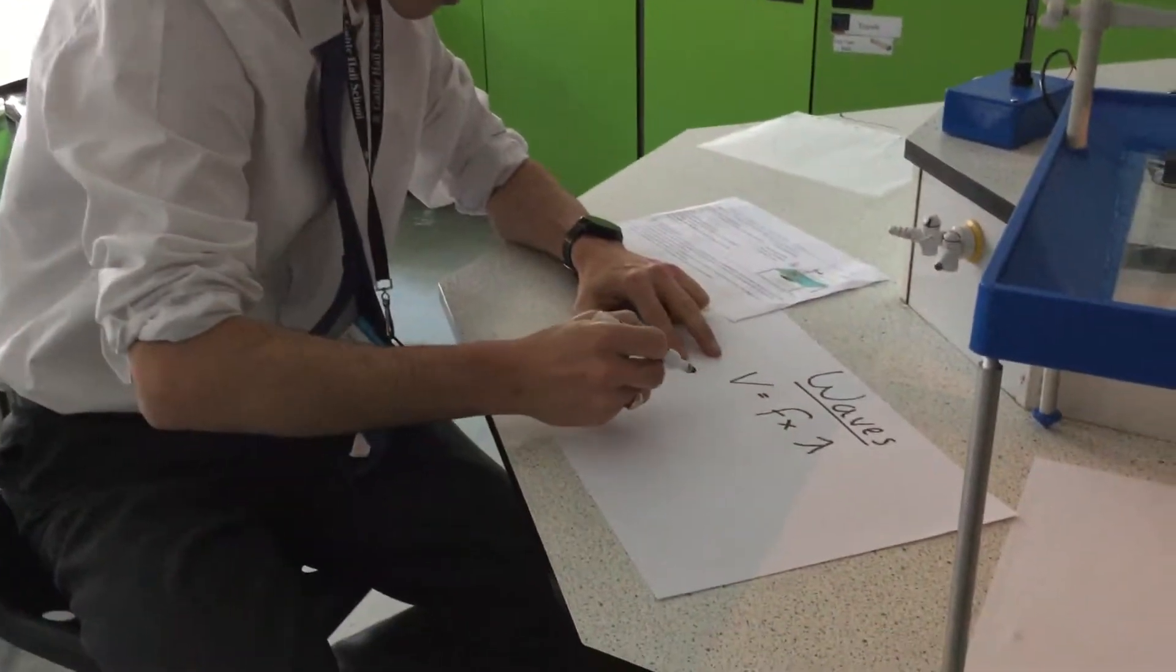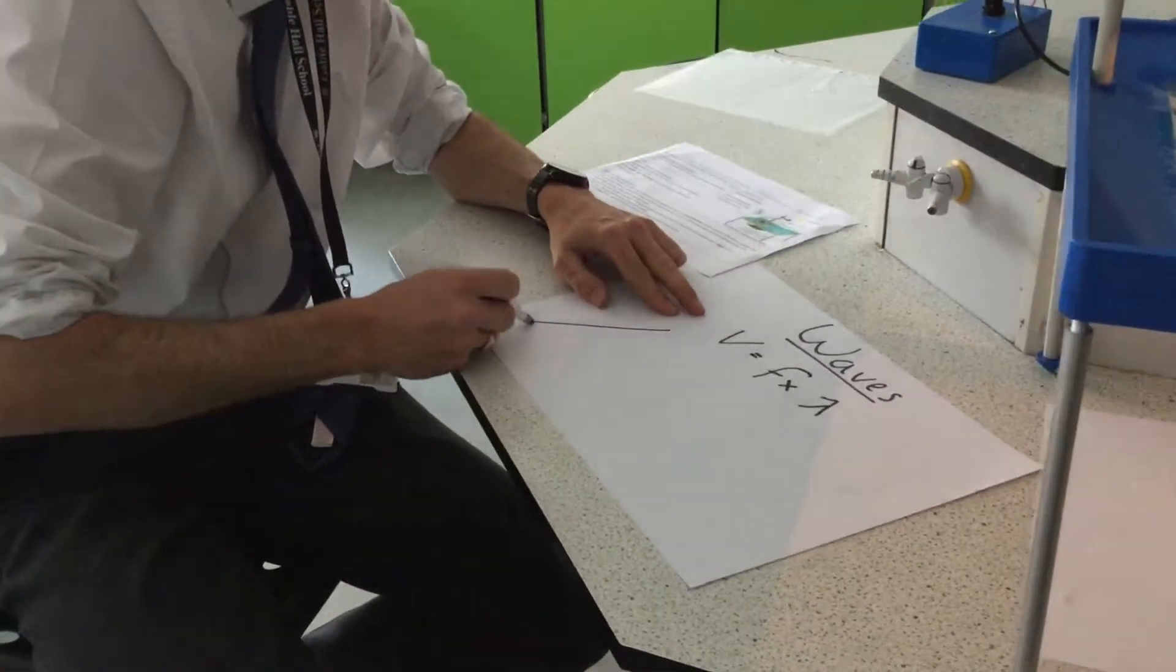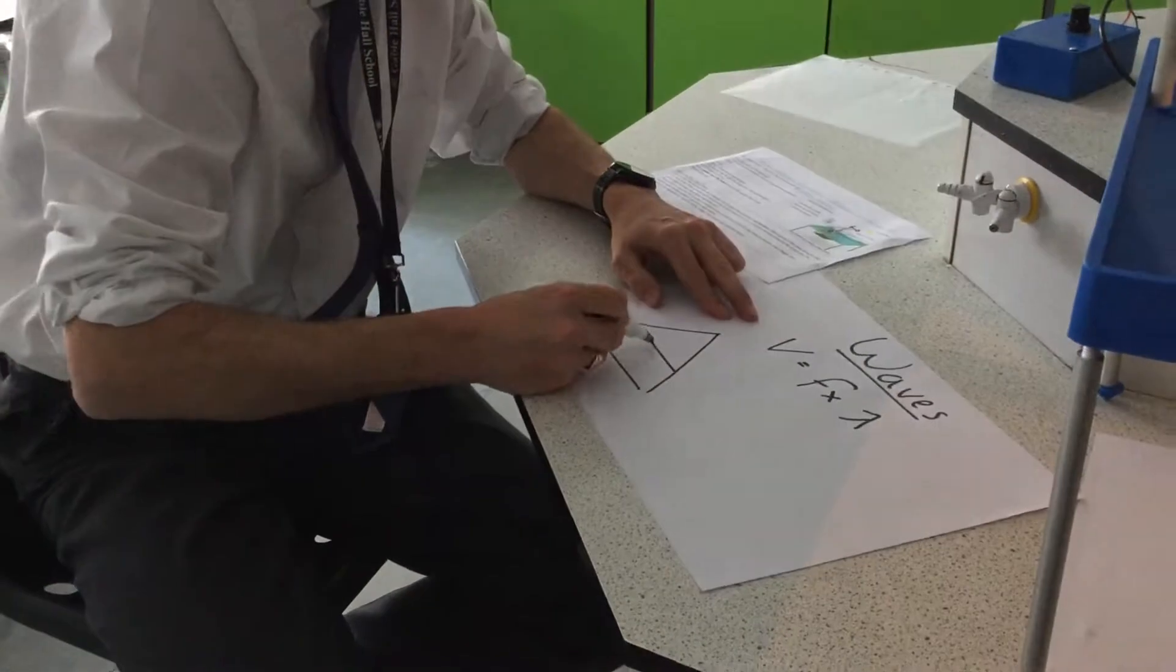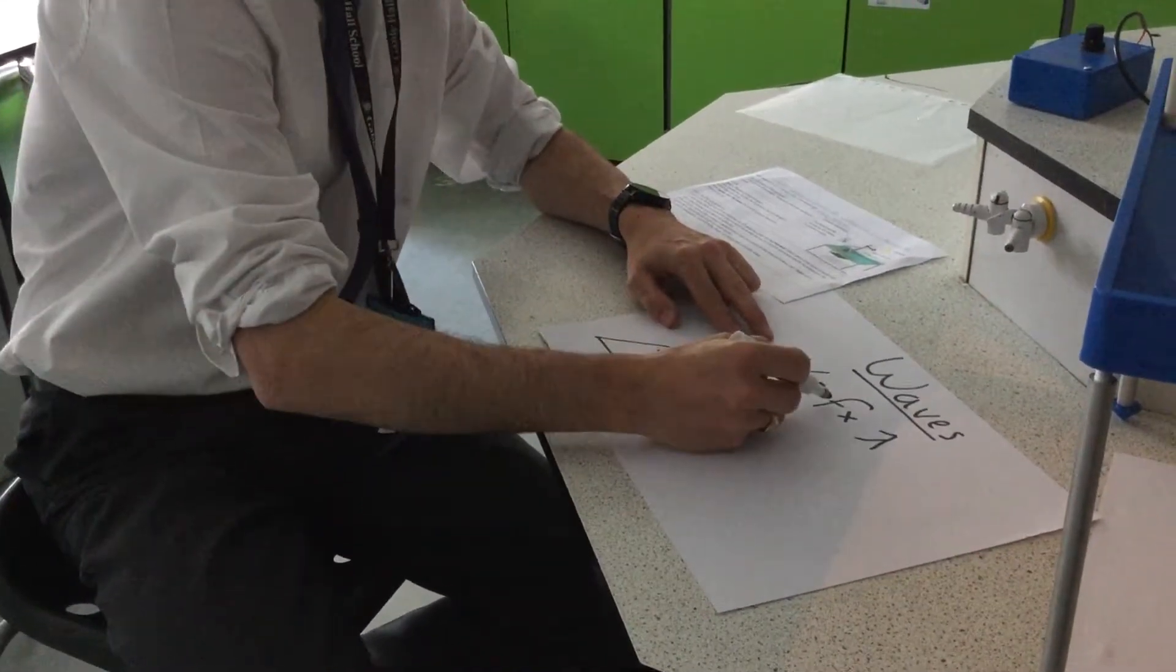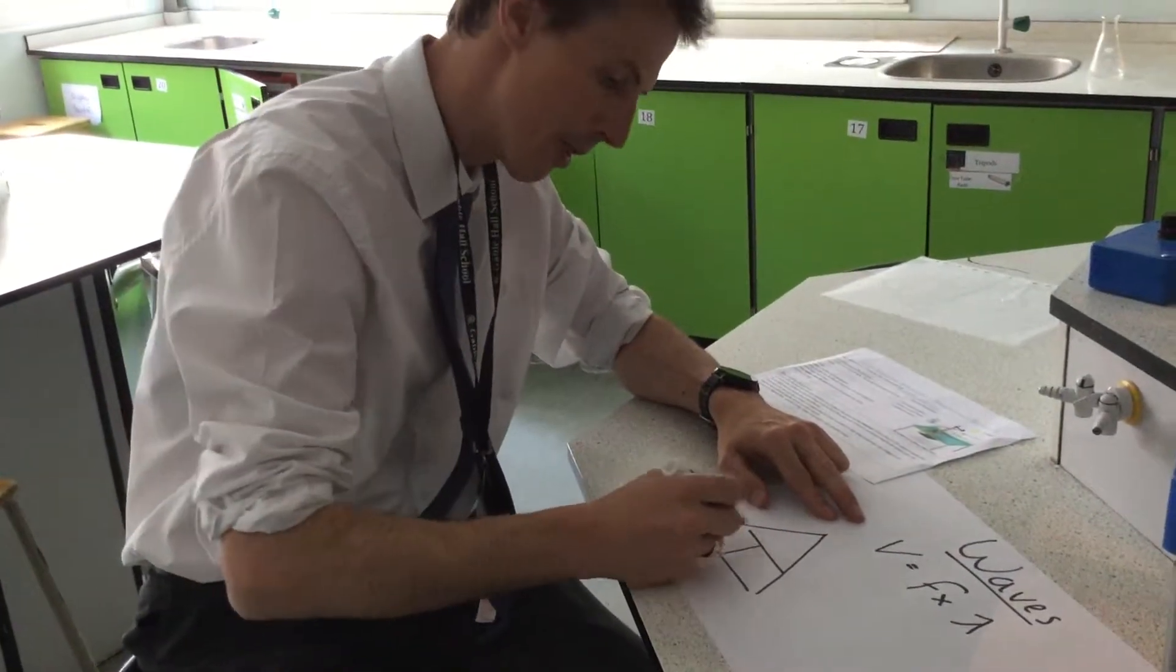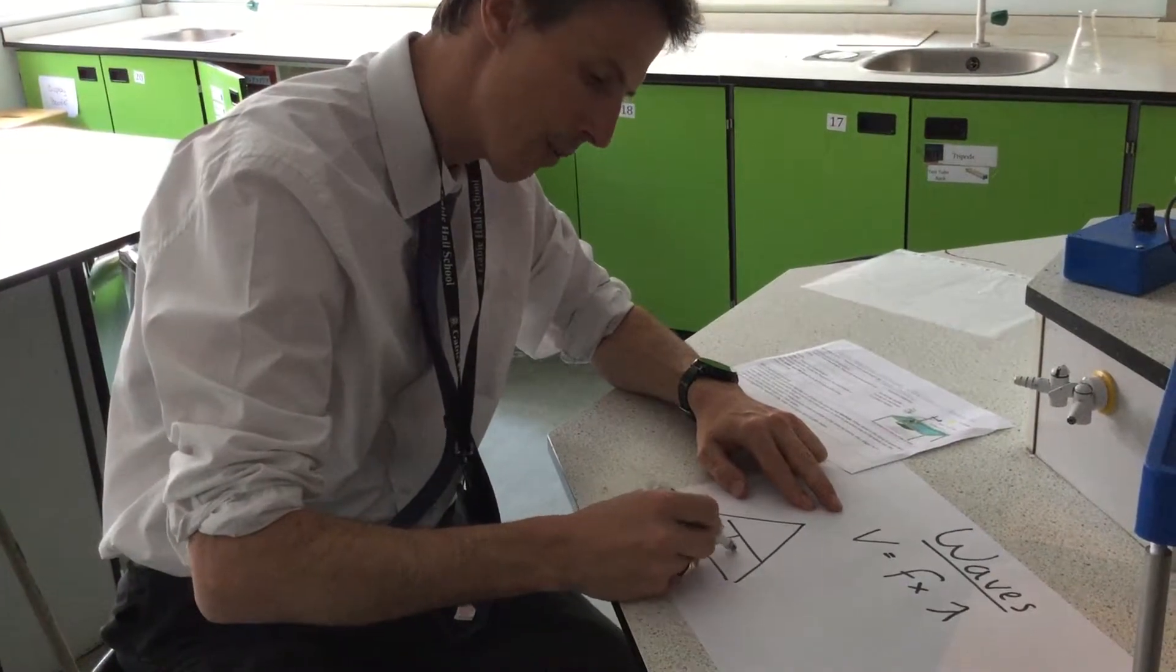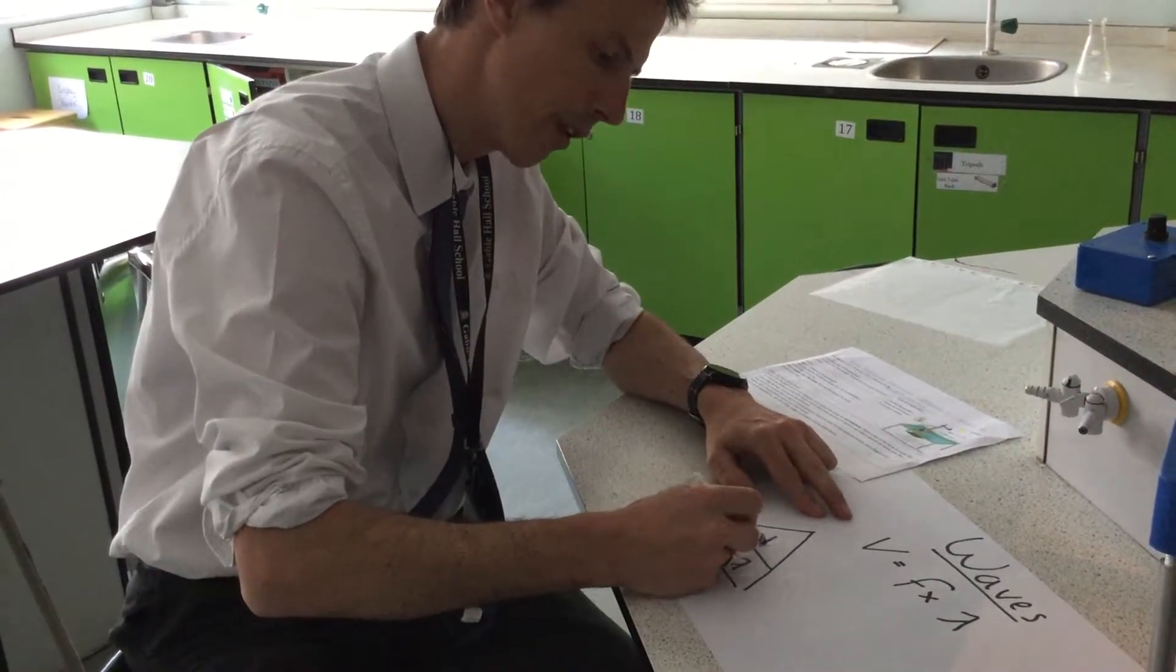So if you have a look, what we often do is put this into a triangle. You've done this many times before but let's just double check we put it in the triangle the right way around. So because we've got frequency times wavelength at the bottom, we've got frequency times wavelength in there and velocity on the top.